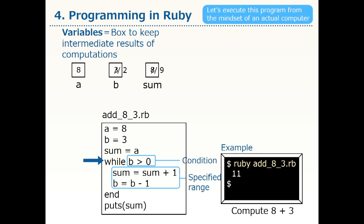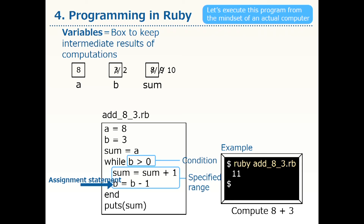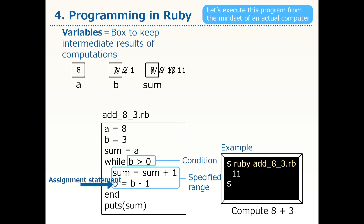The value of B is now 2, so we go down. The current value of SUM is 9, so 9 plus 1 is computed and 10 overrides the value of SUM. The value of B is 2, and 2 minus 1 is computed, so 1 overrides B. Returning to the origin again — B is still greater than 0 — so 10 plus 1 is computed and overrides SUM. Then B minus 1 is computed, giving 0, which overrides B.